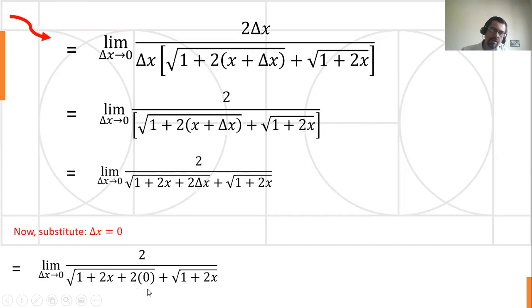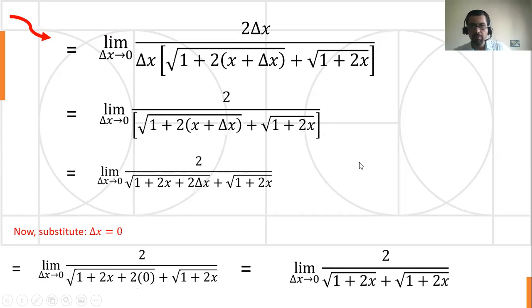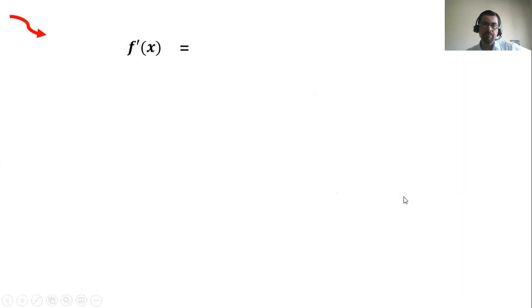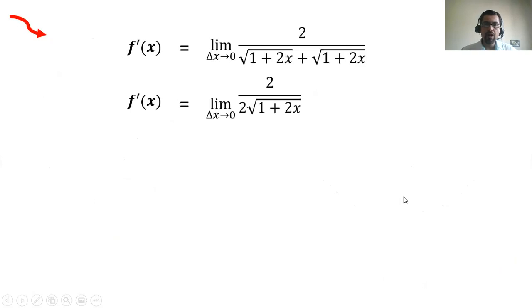Since two times zero is zero, of course, look at the bottom of the fraction. Look at the radicals in the denominator. They are exactly the same. So you can add those two radicals. And when you add those two radicals, one radical plus another radical gives me two radicals. And this is pretty much the derivative.